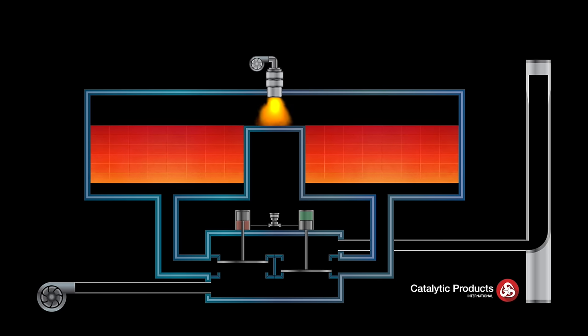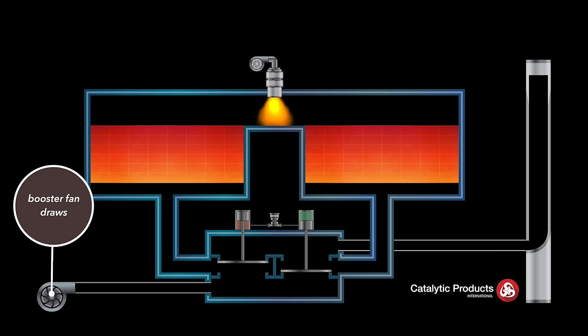Once the RTO has reached the desired temperature set point, the system booster fan draws in the processed emissions and forces these gases into the inlet of the RTO.